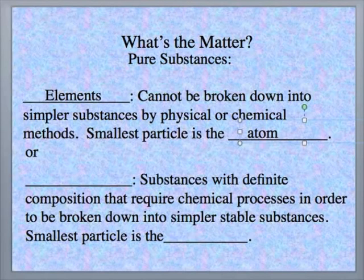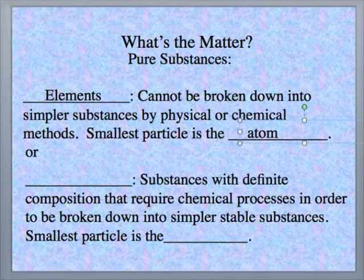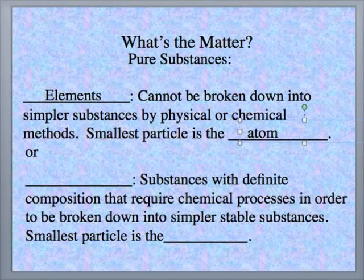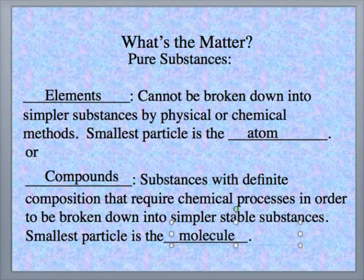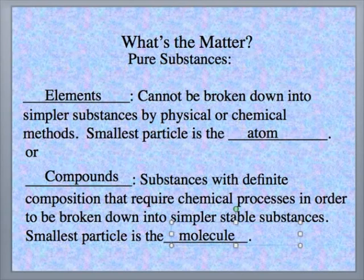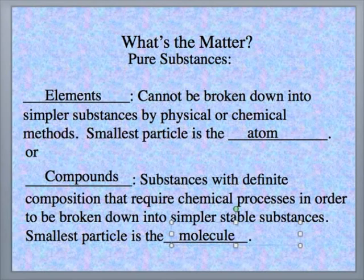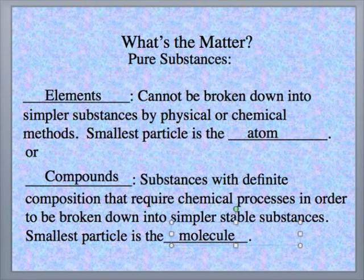But what would you call substances with a definite composition that require chemical processes to be broken down into simpler substances? And what would be the smallest particle of that type of matter? Those would be compounds. They have definite composition and the only way to break them down is through chemical means, chemical processes, to break them down into elements. And the smallest particle of the compound is the molecule.